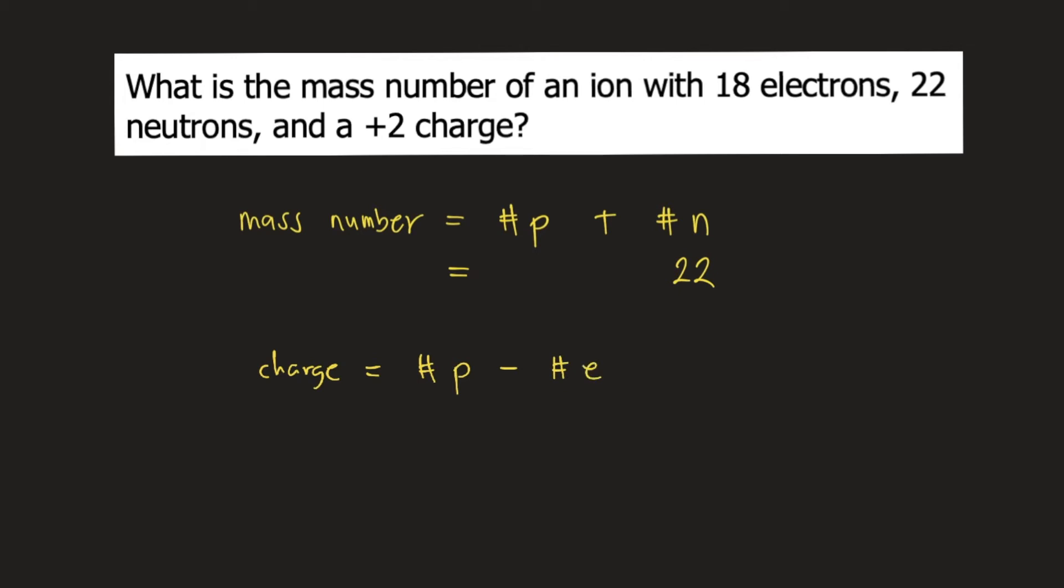So if you have a charge of positive 2 and you have 18 electrons, what would be your number of protons? So number of protons would be 2 plus 18, and that is equal to 20.